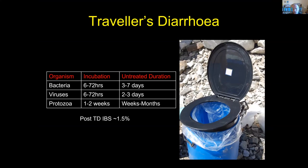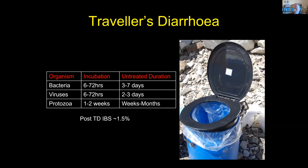Most cases will actually settle: bacteria three days up to a week, viruses a little less, protozoas can go on longer. Post-travel irritable bowel syndrome is said to be at 1.5 percent, but after particularly severe, prolonged traveler's diarrhea it can be as high as 10 percent. Imagine you're at Camp 1 on Pumori or somewhere similar, you've got the squits just as you've gotten into your sleeping bag — you're really self-reliant. Traveler's diarrhea in remote environments is one of those illnesses where the victim, the diagnostician, and the therapist are all the same person.